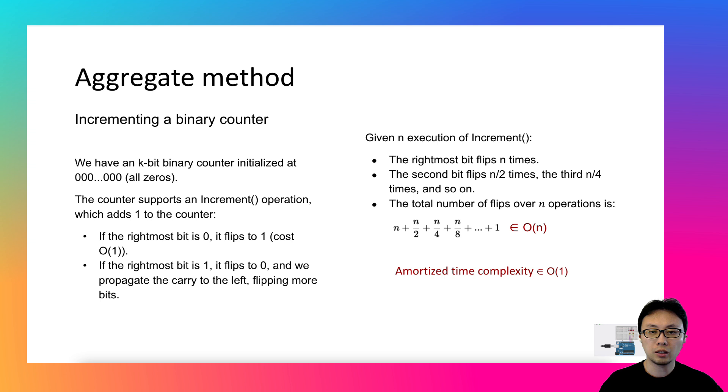When you use n divided by n, that will give you 1. So, the amortized cost per operation is simply constant time.